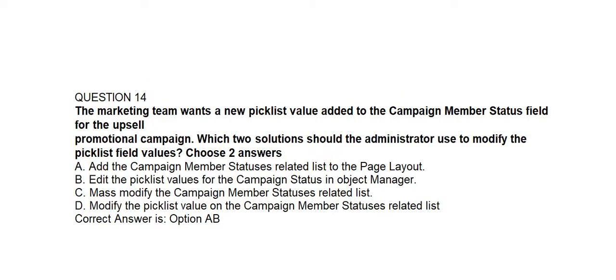Question number fourteen. The marketing team wants a new picklist value added to the Campaign Member Status field for the upsell promotional campaign. Which two solutions should the administrator use to modify the picklist value field values? Option A: Add the Campaign Member Statuses related list to the page layout. Option B: Edit the picklist values for the campaign status in Object Manager. Option C: Modify the Campaign Member Statuses related list. Option D: Modify the picklist value on the Campaign Member Statuses related list. Correct answer is Option A and Option B.